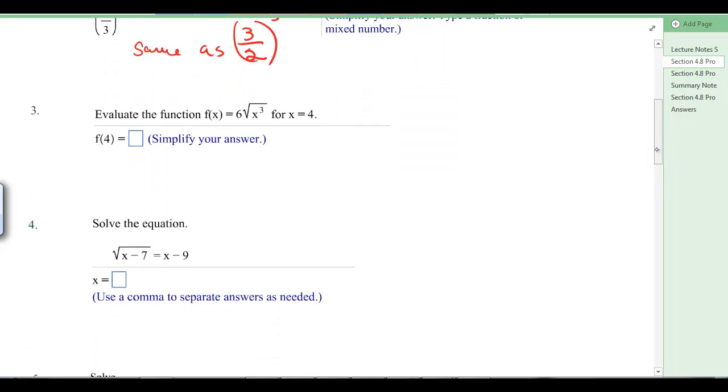Number 3, evaluate the function f of x equals 6 times the square root of x cubed for x equals 4. So that means I'm going to plug this 4 where x is. So I've got 6 times the square root of 4 cubed, which is 6 times the square root of 64, which is 6 times 8.